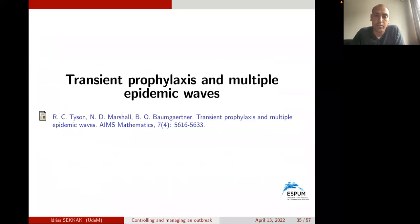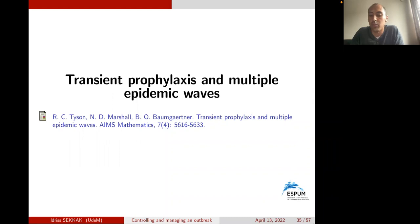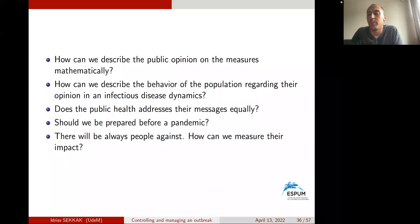We were then motivated by the work of Professor Tyson on transition prophylaxis and multiple epidemic waves, which raised further questions. The question was: how can we describe public opinion on measures mathematically, and how can we describe population behavior regarding opinion in infectious disease dynamics? Also: does public health address its message equally? Should we be prepared before a pandemic? And there will always be people against measures — how can we measure the impact on the speed of an infectious disease?